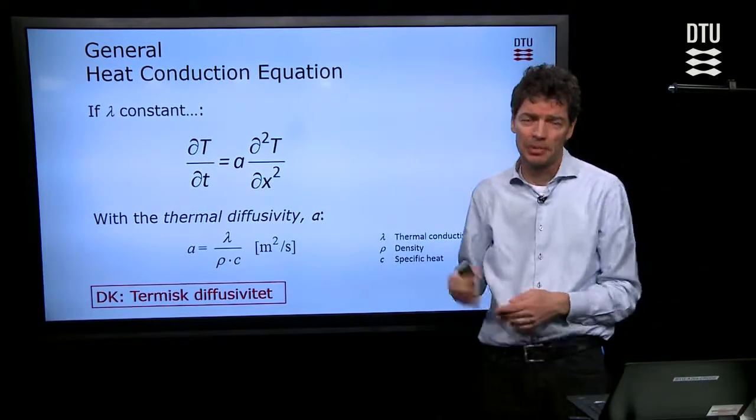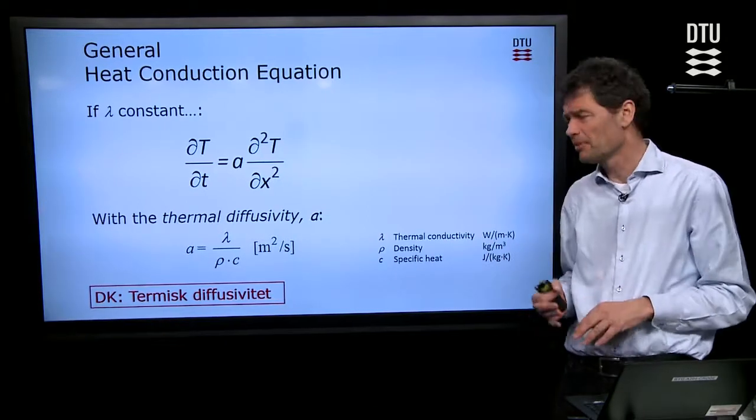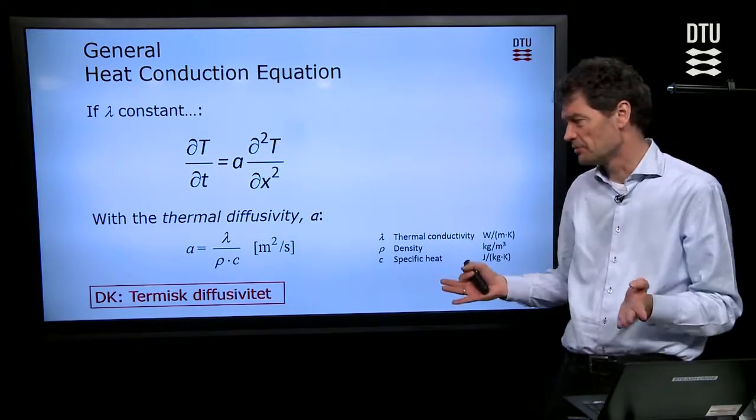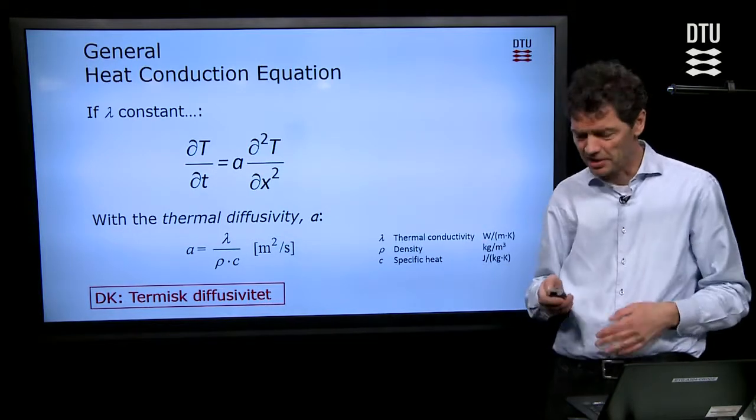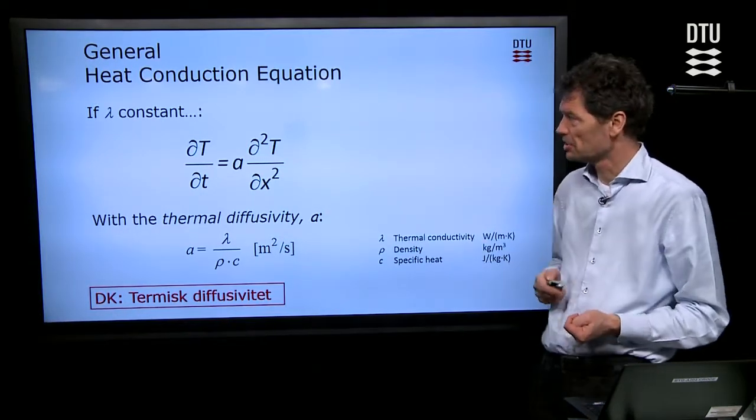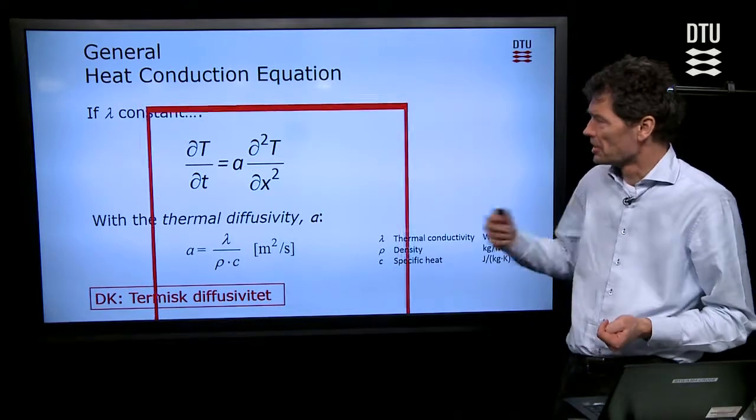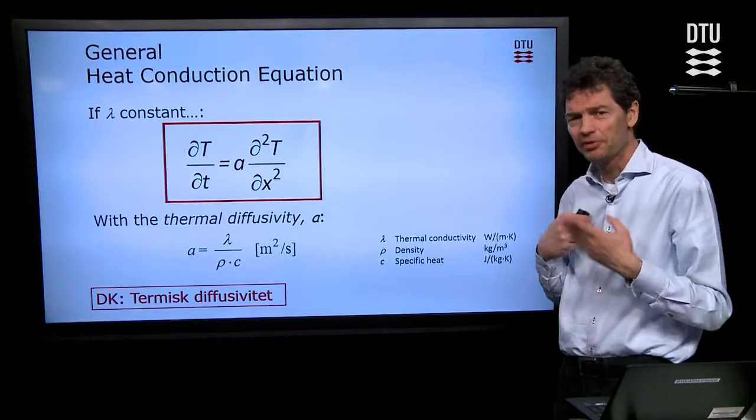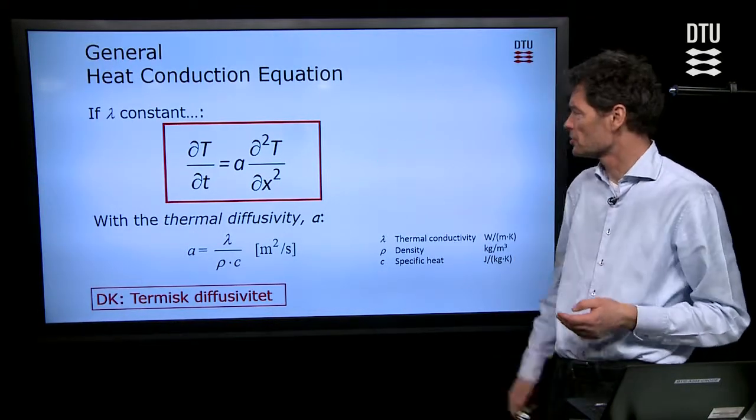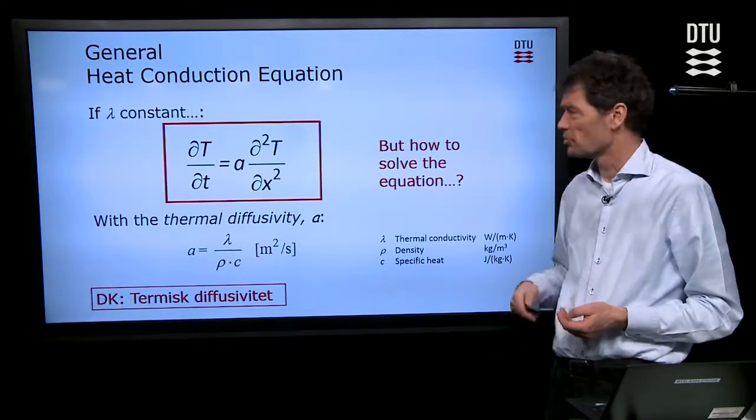The thermal diffusivity becomes another characteristic of a building material. It has a Danish name, thermisk diffusivity. When you see the red brackets, that's in Danish. But this equation is actually what this series of lectures on transient heat conduction theoretically is about, how to calculate or solve this equation.